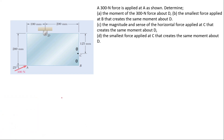Let's read the question. A 300 newton force is applied at A as shown. Determine: (a) the moment of the 300 newton force about D, (b) the smallest force applied at B that creates the same moment about D, (c) the magnitude and sense of a horizontal force applied at C that creates the same moment at D, and (d) the smallest force applied at C that creates the same moment about D.